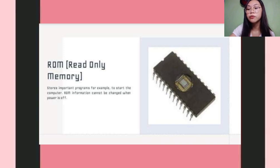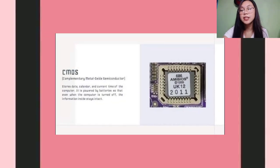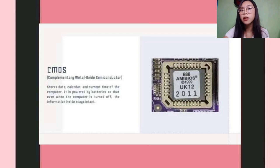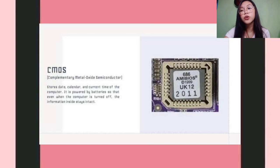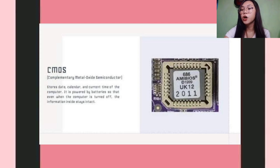ROM information cannot be changed when power is off. And number 3 is CMOS, or Complementary Metal Oxide Semiconductor, which stores the state, calendar, and current time of the computer. It is powered by batteries so that even when the computer is turned off, the information inside stays intact.